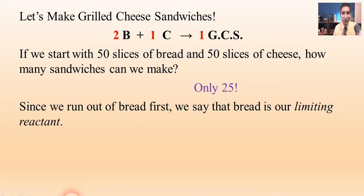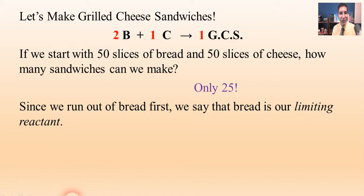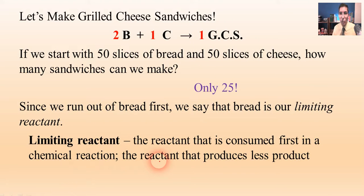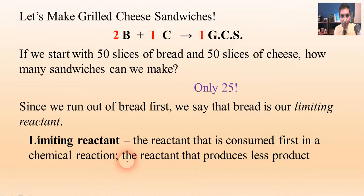In chemistry, the substance that we run out of first — which would be the bread in this case — is our limiting reactant. Sometimes it's called the limiting reagent; it's the same thing. So in our example we run out of bread first, so bread is our limiting reactant. That's the reactant that is used up or consumed first in a chemical reaction. Another way of saying that: it's the reactant that produces less product. Those two phrases mean the exact same thing, because the bread was consumed first and the bread would produce less product.